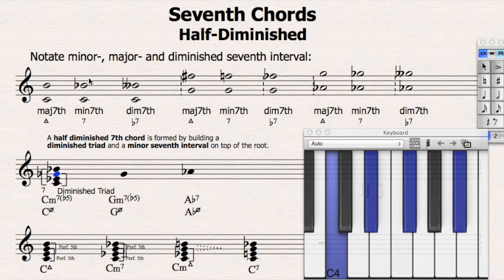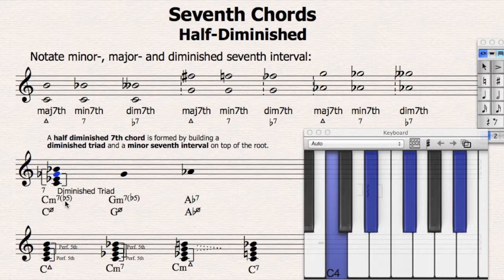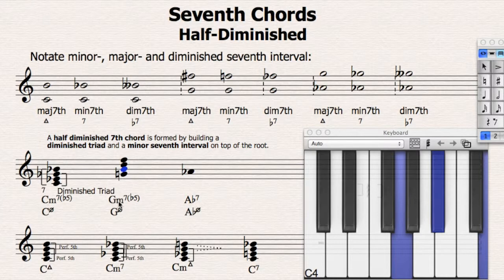The seven indicates the minor seventh, and the flat five indicates the interval between the root and the fifth, which is a diminished fifth. By the way, in chord symbols every alteration of a chord tone goes last, so the flat five goes last because it's an altered fifth — an altered chord tone. So let's build a G minor seven flat five, or G half diminished chord.